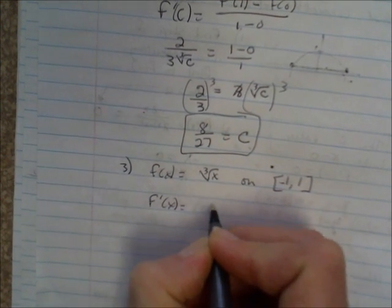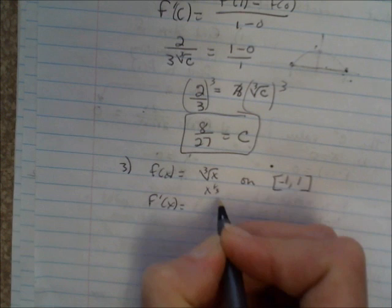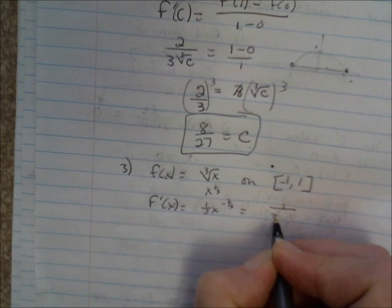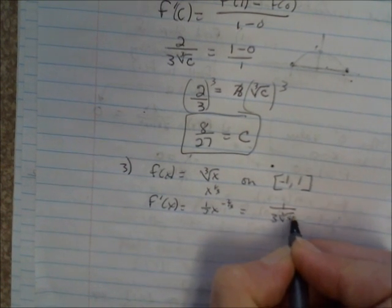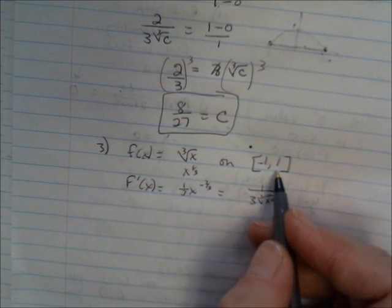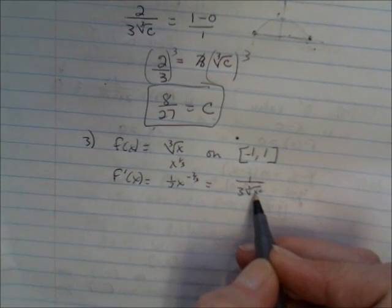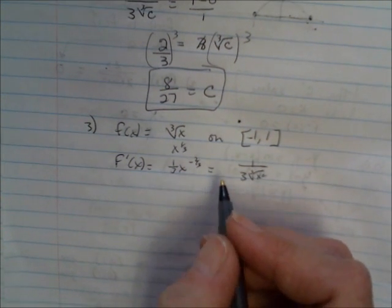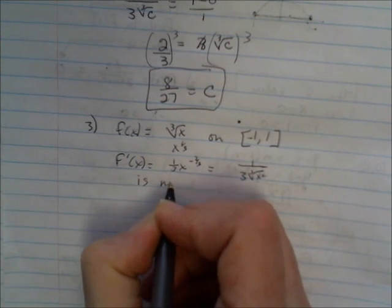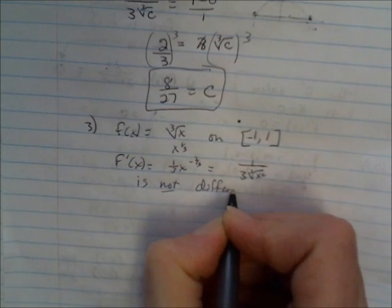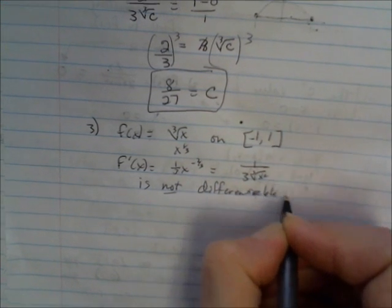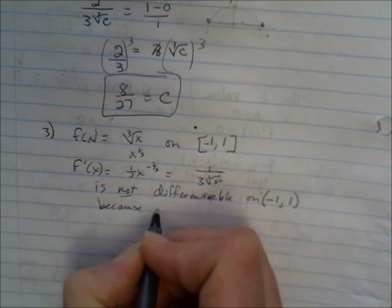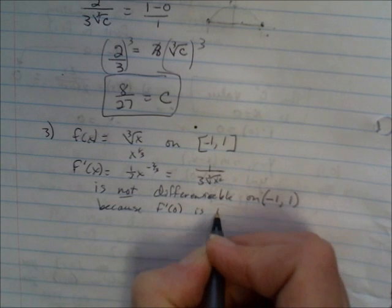f'(x) equals, well, this is x to the 1/3. So f'(x) is 1/3 x to the negative 2/3, which is 1 over 3 times the cubed root of x squared. This is not differentiable on the open interval, because if you put x equals 0 in here, you get an undefined fraction. So the second condition for the Mean Value Theorem: this is not differentiable on the open interval between negative 1 and 1, because f'(0) is undefined.